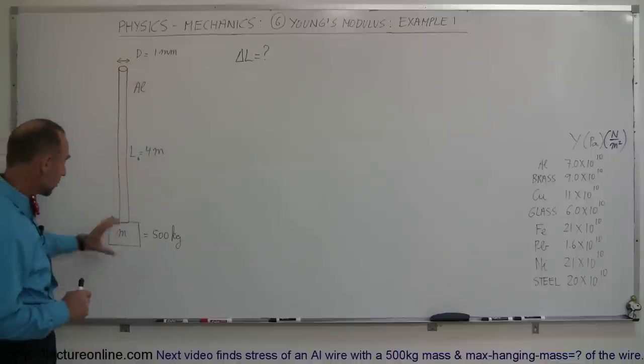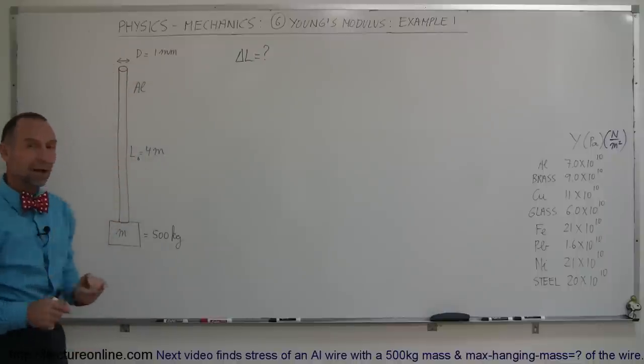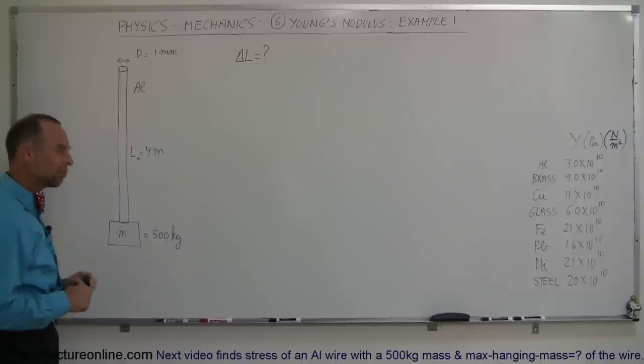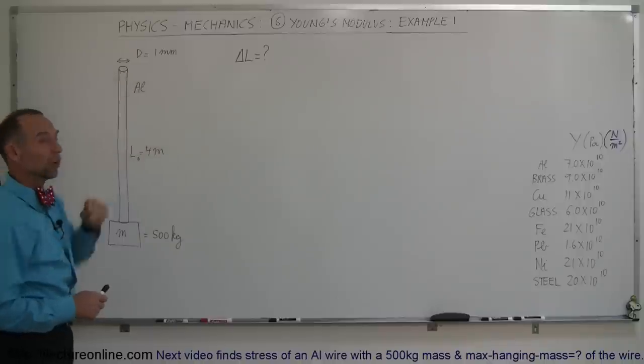Let's say the original length is 4 meters long and we suspend at the bottom of that wire a mass of 500 kilograms, which is over 1,000 pounds. The wire has a diameter of 1 millimeter.